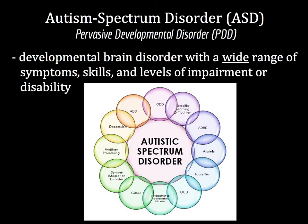Autism spectrum disorder, ASD, is a type of pervasive developmental disorder in which those diagnosed with ASD struggle with social interaction and communication, and exhibit repetitive and restrictive behaviors. It is a spectrum disorder in that individuals can exhibit an incredibly wide variety of symptoms, which may at times overlap with other diagnoses. Someone can be both autistic and have ADHD, or be autistic and gifted academically or in some other way.